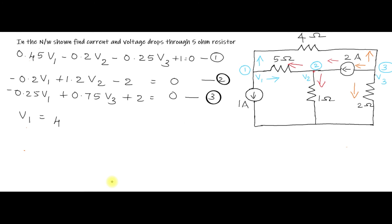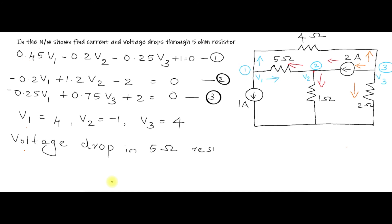Solving the three equations simultaneously, you get V1 equals 4, V2 equals minus 1, and V3 equals 4. To find the voltage drop in the 5 ohm resistor, consider V1 minus V2: that is 4 minus (minus 1) which equals 5 volts. This 5 volt drop is the voltage across the 5 ohm resistor. Please like this video, subscribe to my channel, and share it with your friends. Thank you.